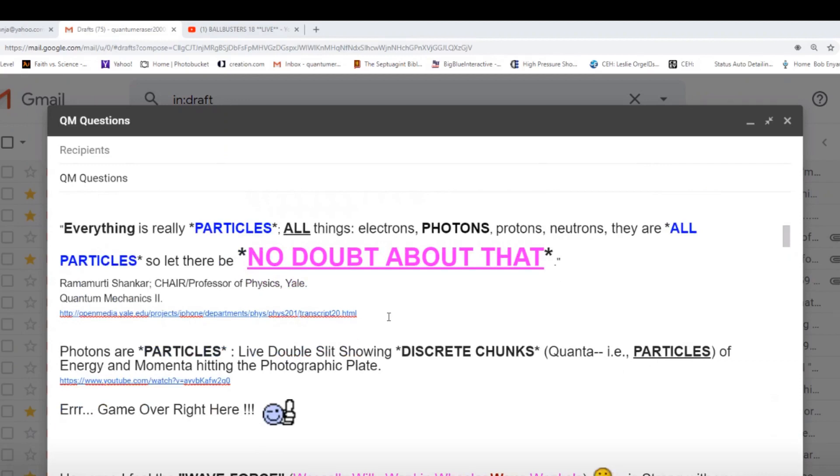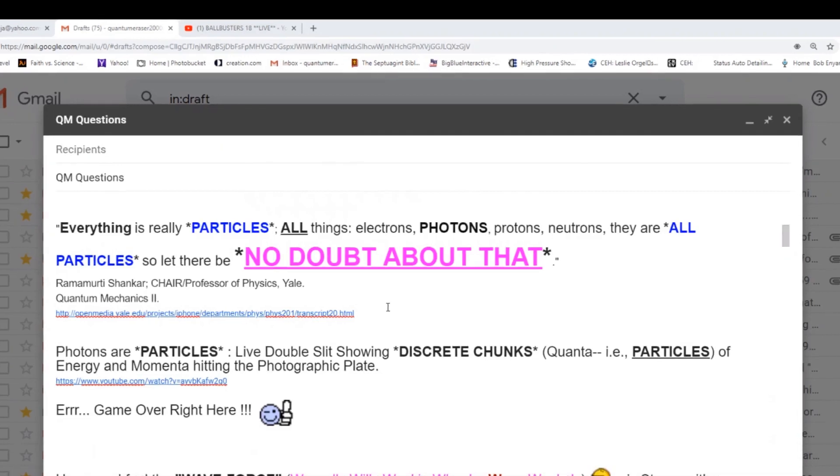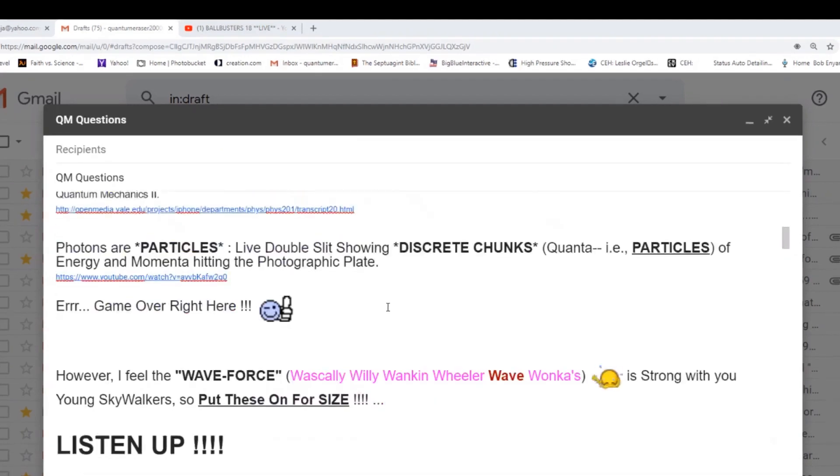Professor Shankar, chair of physics at Yale: everything is really particles, all things, electrons, photons, protons, neutrons, they are all particles, so let there be no doubt about that. So we have photons are particles. We have a live double slit showing discrete chunks, that means quanta, particles of energy and momenta hitting the photographic plate. So it's really over right there.